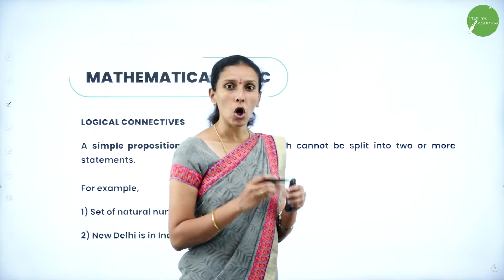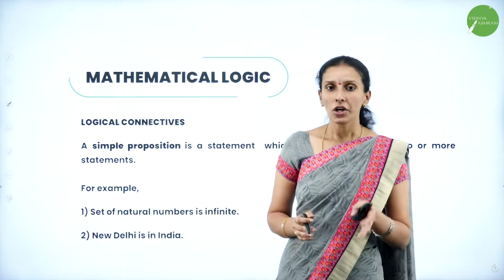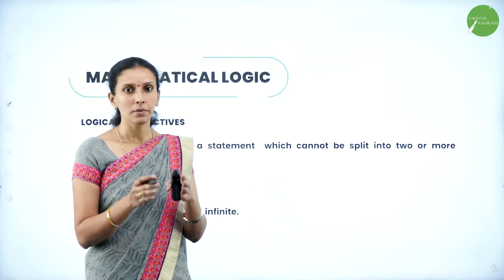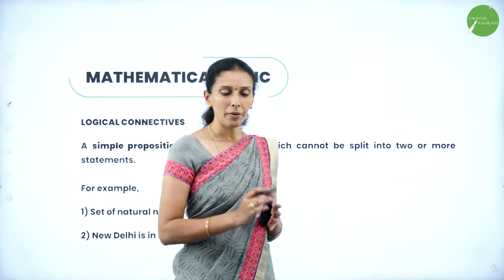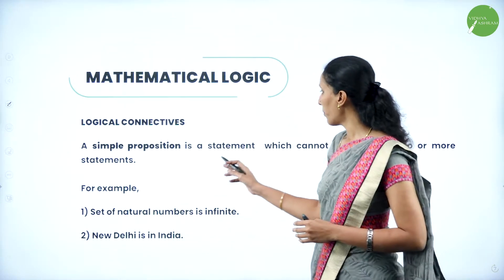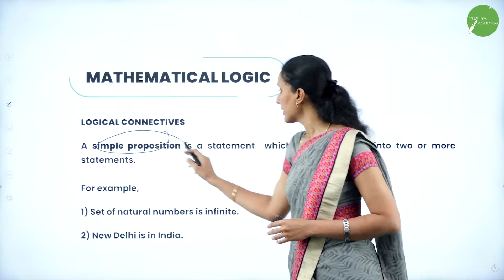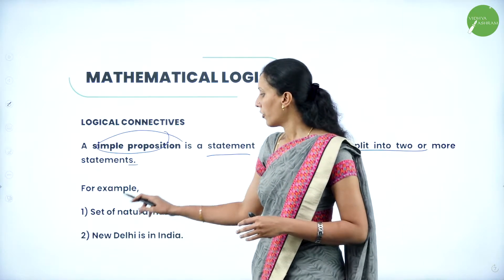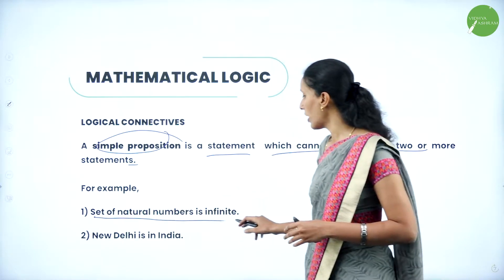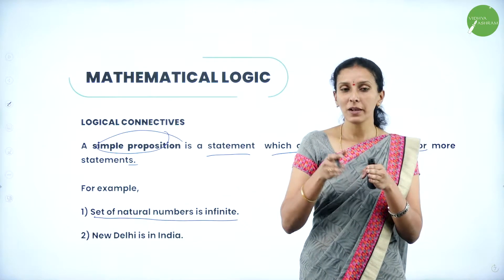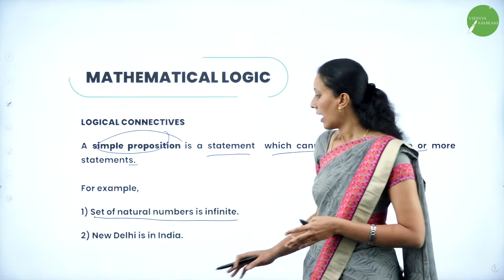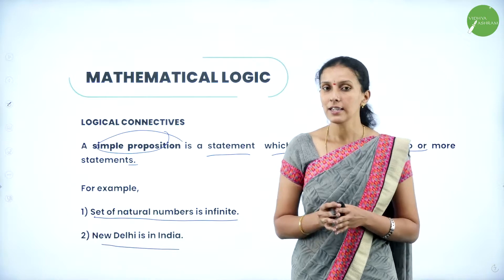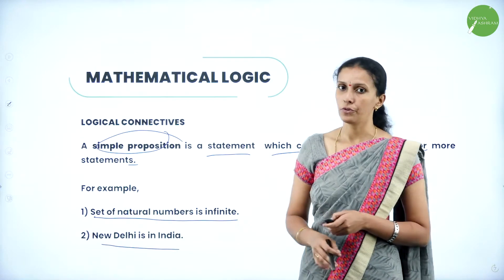Next we come across logical connectivities. Logical connectivities are the connectives which connect simple propositions. A simple proposition is a statement which cannot be split into two or more statements. For example, 'the set of natural numbers is infinite' — you cannot split this into two other statements. Similarly, 'New Delhi is in India' cannot be split. These are called simple propositions.